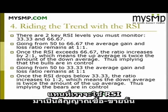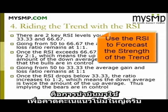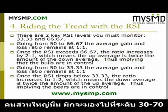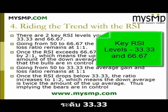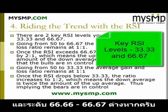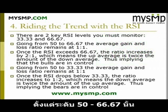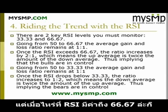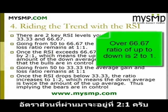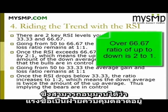Instead of using the RSI for buy and sell signals, a more effective use of the tool is to utilize its ability to forecast the primary trend. While most traders focus on the 30 and 70 level, the most important levels with the RSI indicator are 33.33 and 66.66 or 66.67. These represent internal Fibonacci relationships with the indicator. Going from 50 to 66.67, the average gain and loss ratio remains at 1 to 1. Once the RSI exceeds 66.67, the ratio increases to 2 to 1, which means the up average is twice the amount of the down average, thus implying that the bulls are in control.